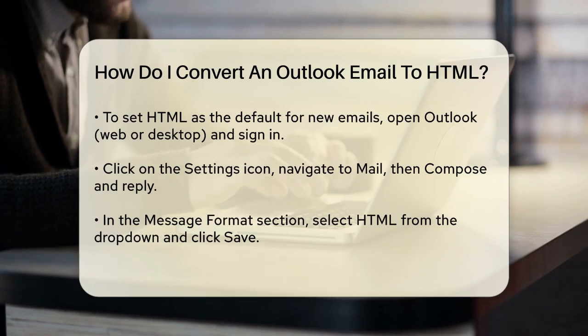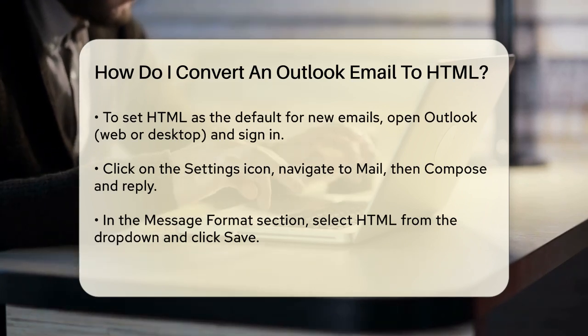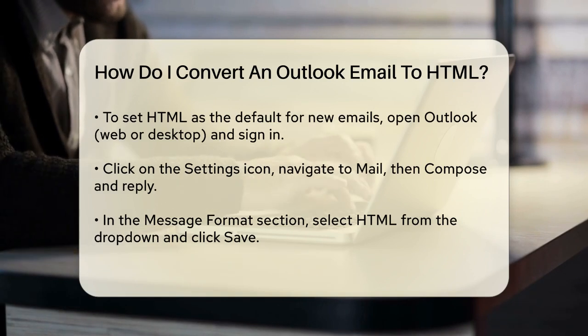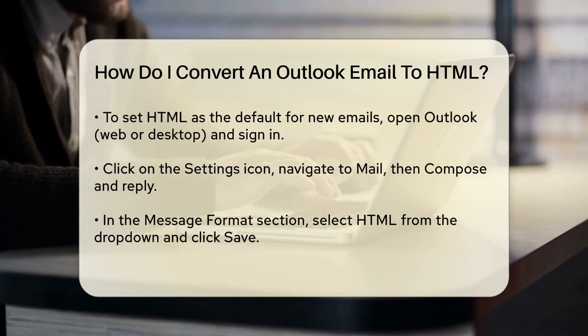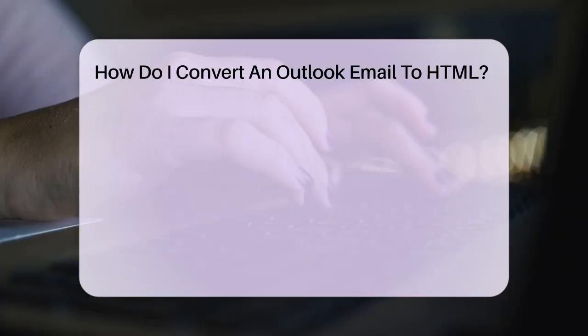If you want to change the format for a single email, it's just as straightforward. When composing a new email, look for the Meatball menu icon — three horizontal dots — on the top ribbon.